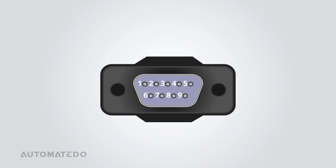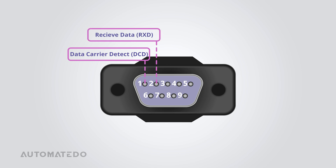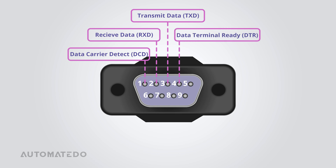Let's explore the RS-232 DB9 pinout. Pin 1, the Data Carrier Detect or DCD, indicates the presence of a carrier signal. Pin 2, the Receive Data or RxD, carries data from the receiver to the transmitter. Pin 3, the Transmit Data or TxD, carries data from the transmitter to the receiver. Pin 4, the Data Terminal Ready or DTR, indicates the readiness of the receiver to communicate. Pin 5, the Signal Ground or GND, is the ground reference for all signals.